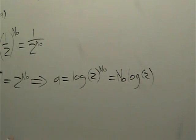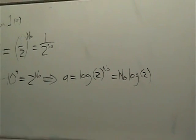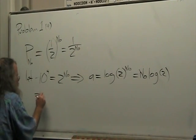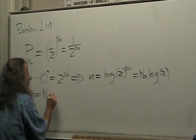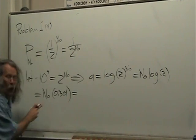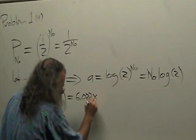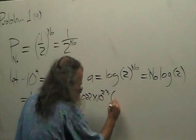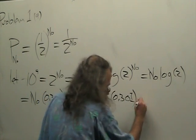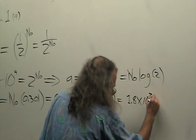And so, can anybody tell me what the log of two is? Yeah. Okay. So this is equal to N naught times 0.301, which is equal to, since N naught is Avogadro's number, 6.022 times 10 to the 23rd, times 0.301, and that's equal to 1.8 times 10 to the 23rd.